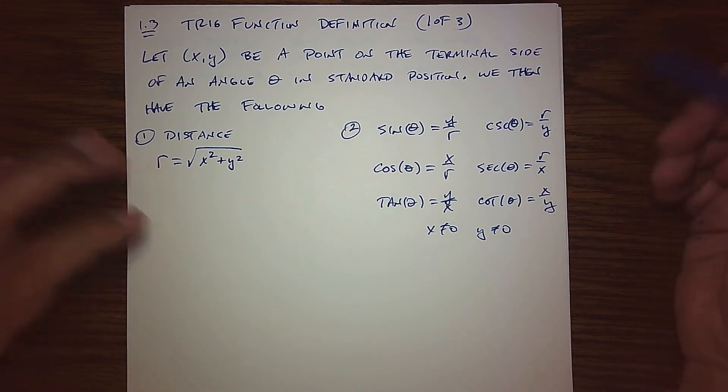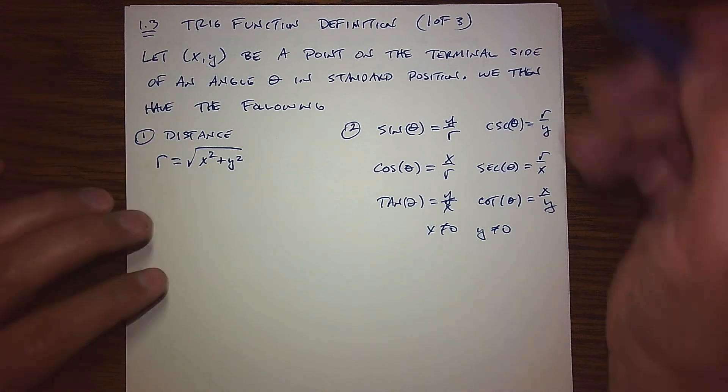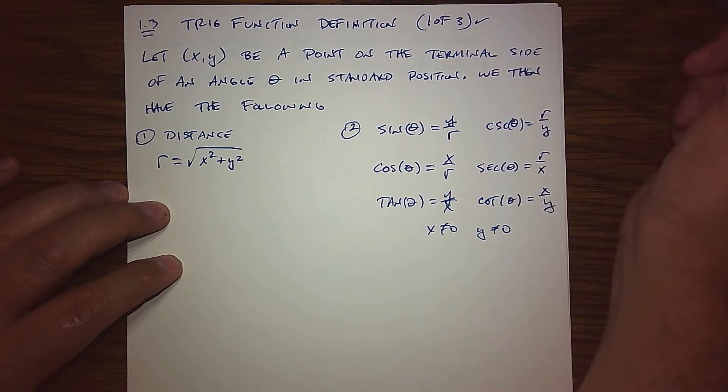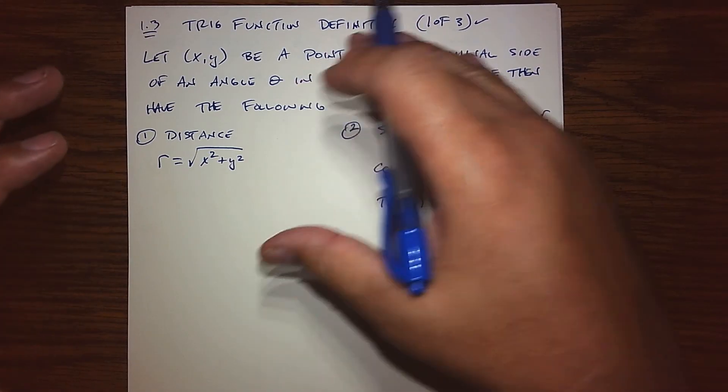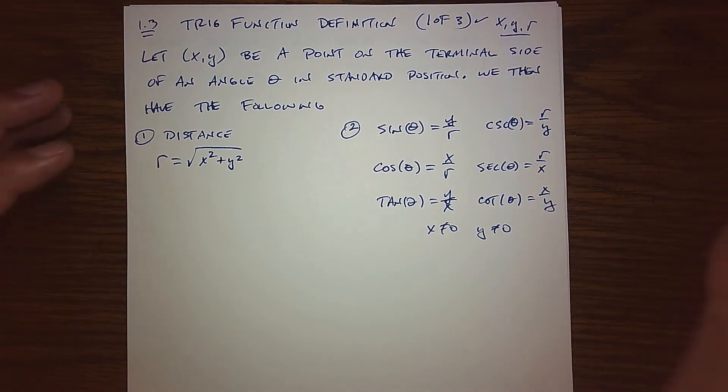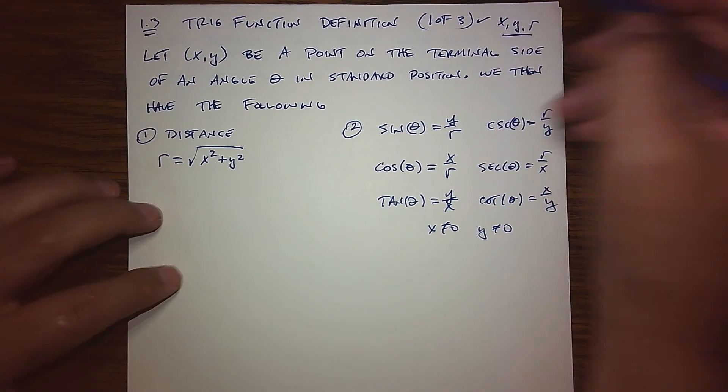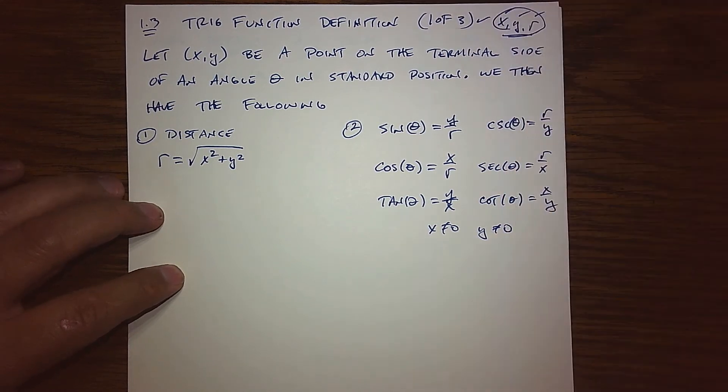And so we're now ready to put this all together in official trig definition. The first thing I want to let you guys know, this is actually one of three. It turns out that there's actually several ways to define our trig functions. They're all interconnected, but this will be the first one. And I actually like to call it our X, Y, R definition. Because that's basically what this definition depends on. An X value, a Y value, and an R value. So that's why I playfully call this first definition.